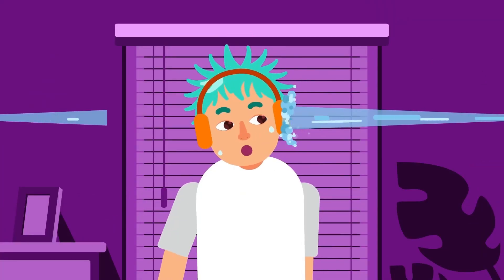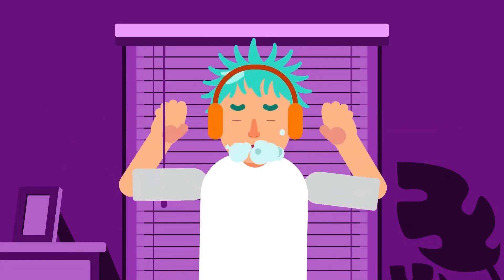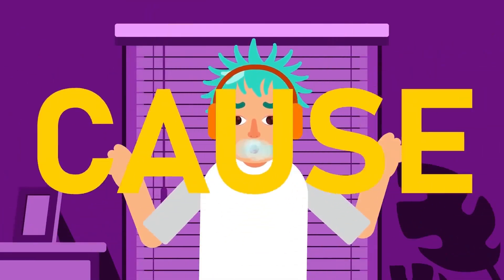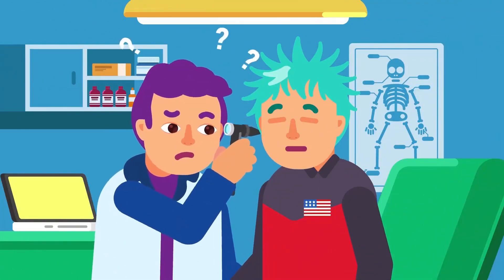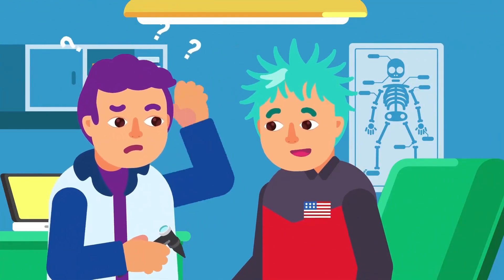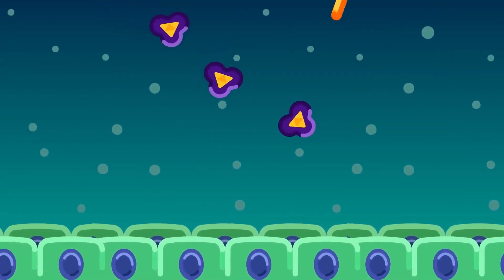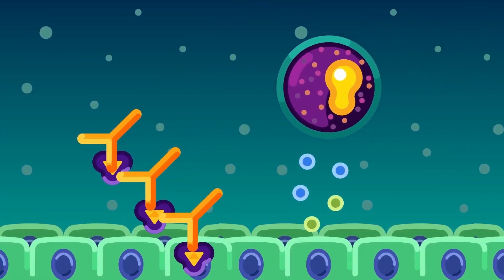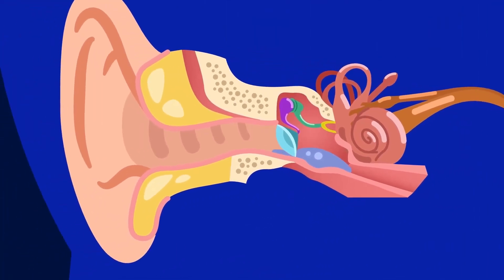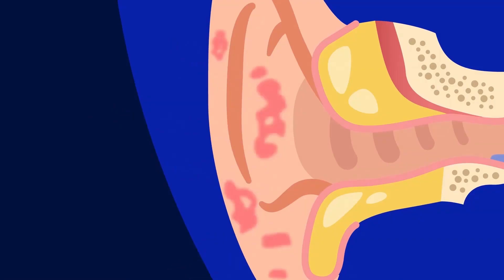The fourth symptom is Aural Fullness: it is when the sufferer feels pressure or fullness in the affected ear. Cause: scientists are still unsure about the cause of Meniere's disease, but currently they think it involves both internal factors such as immune system disorder and poor fluid drainage, and external factors such as infection and allergy.